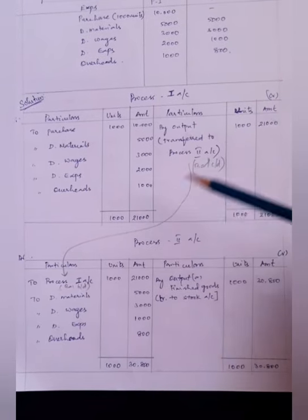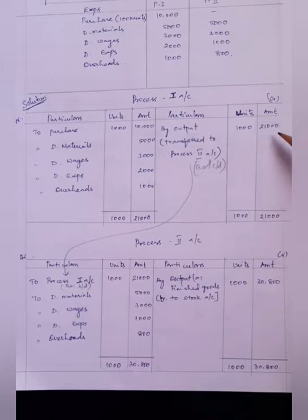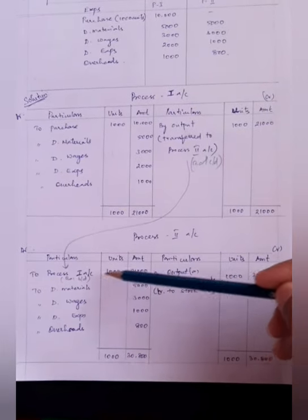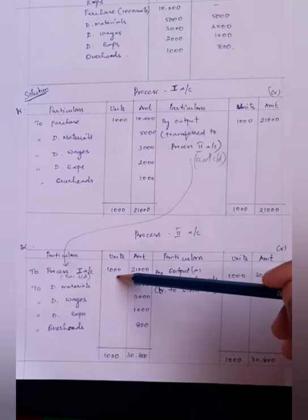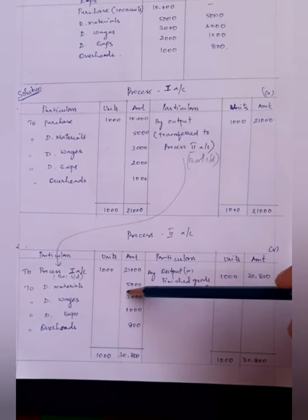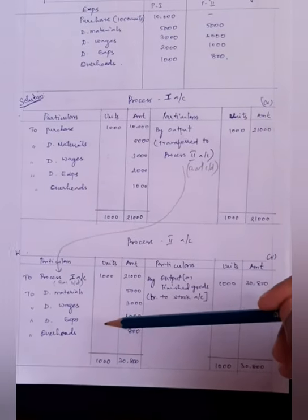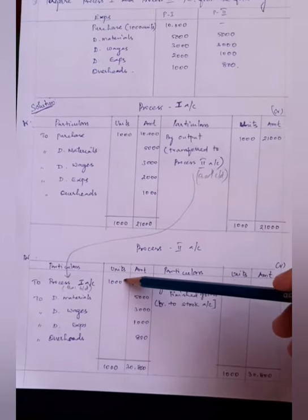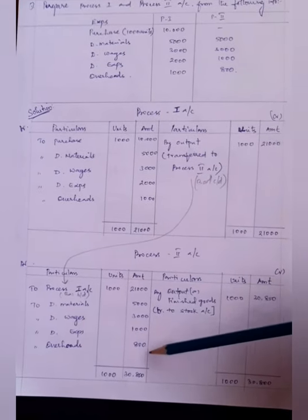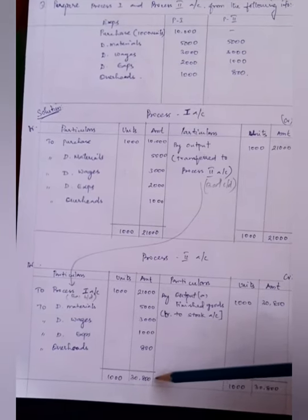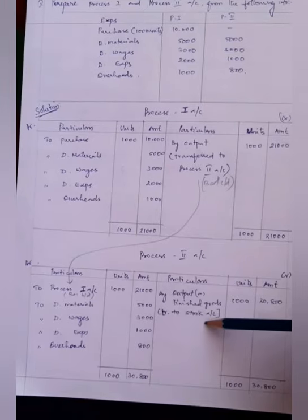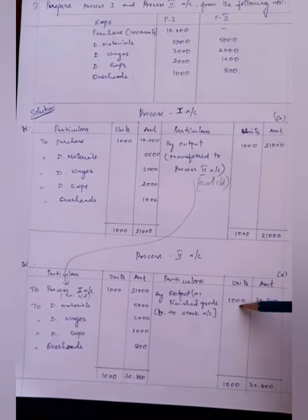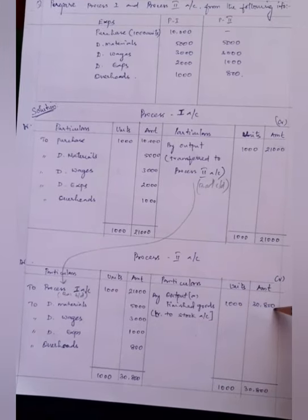For process 2 account: the output of process 1 — 1,000 units costing Rs. 21,000 — is accumulated to process 2. Transferred from process 1 account: 1,000 units, cost Rs. 21,000. Material cost for process 2: Rs. 5,000. Wages: Rs. 3,000. Expenses: Rs. 1,000. Overheads: Rs. 800. Total input units for process 2: 1,000. Total cost of production: Rs. 30,800. The output of process 2 is finished goods, transferred to stock account — 1,000 units at a cost of production of Rs. 30,800. Thank you.